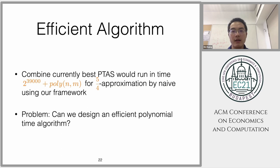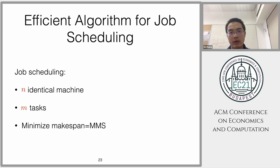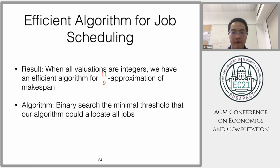First of all, we see that for job scheduling, a special case of chore allocation where all agents have identical valuations, the minimum makespan is like the maximum share. For this, we can use binary search to get an 11/9 approximation.